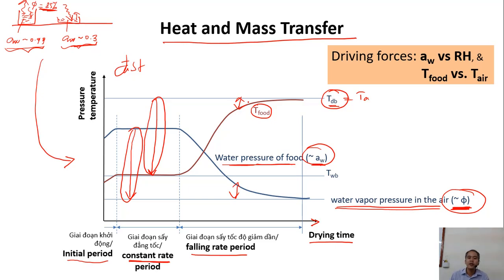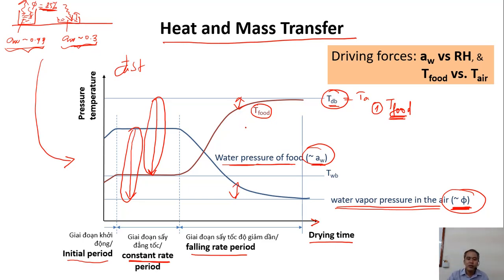During the constant rate period, the temperature of food does not increase to the dry bulb temperature of the air. Instead, the temperature of the food during the constant rate period is equal to the wet bulb temperature of the air.